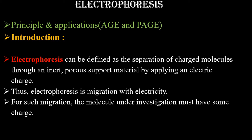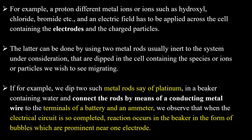Electrophoresis is migration with electricity. For such migration, the molecules under investigation must have some charge on them — for example, protons of different materials, or ions such as hydroxyl, chloride, bromide, etc. An electric field has to be applied across the cell containing electrodes and the charged particles. This can be done by using two metal rods — the electrodes are usually two inert material rods, deep in a cell containing the species or ions or particles we wish to see migrating.